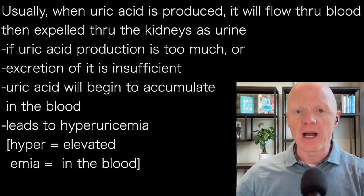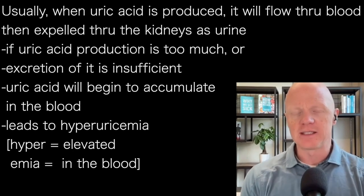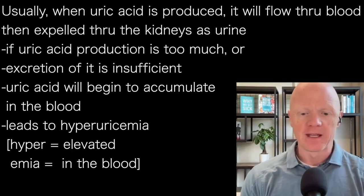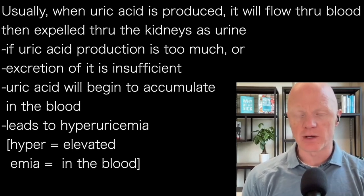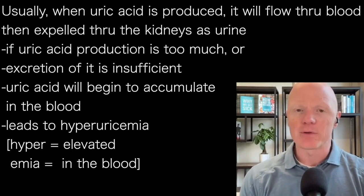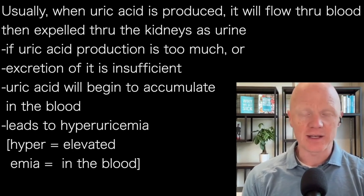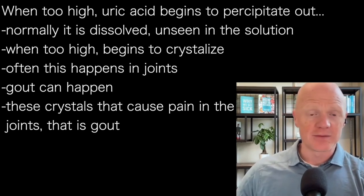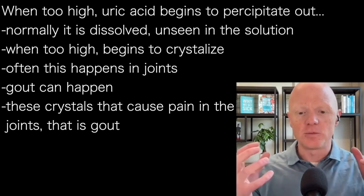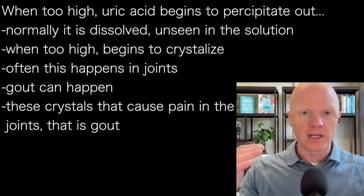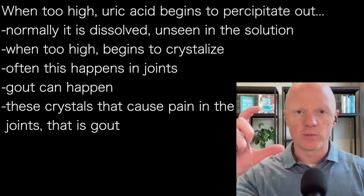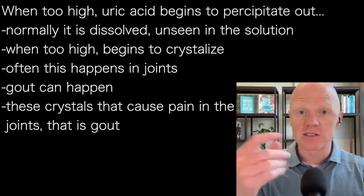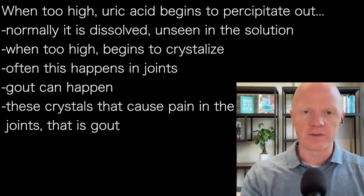Once uric acid levels start to get too high, we get a condition called hyperuricemia. "Hyper" means elevated, and the suffix "-emia" means in the blood — so hyperuricemia is simply high uric acid levels in the blood. Normally the uric acid is dissolved; if you were looking at a tube of water with uric acid in it, you wouldn't see it — it's dissolved, mixed within the solvent.